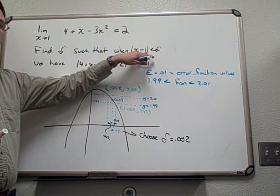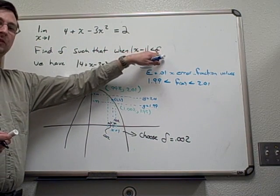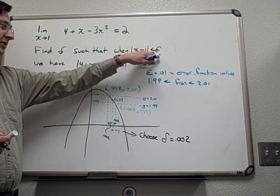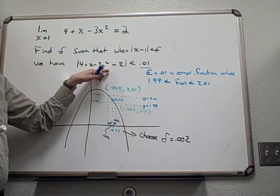So whenever I take an x value minus 1, as long as that's within 0.002, choosing delta to be 0.002, this is guaranteed to be true.